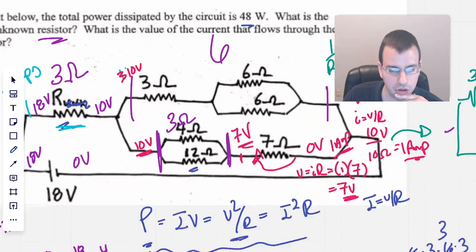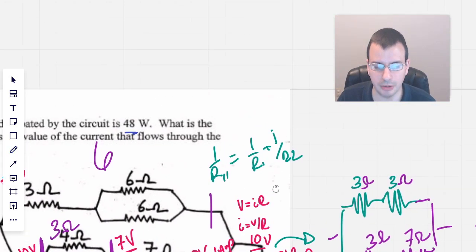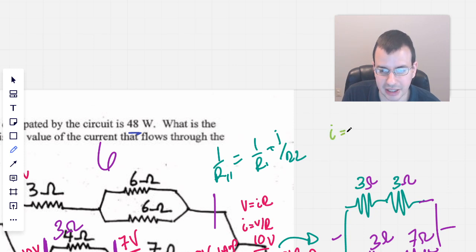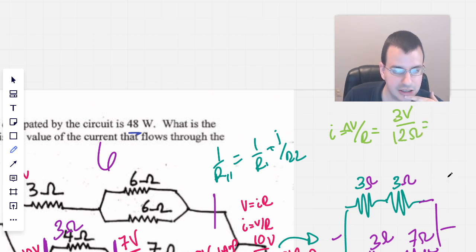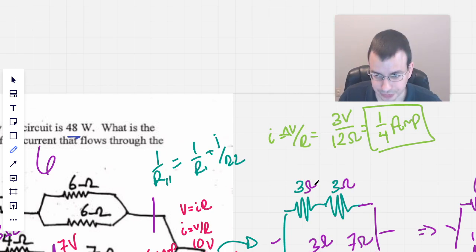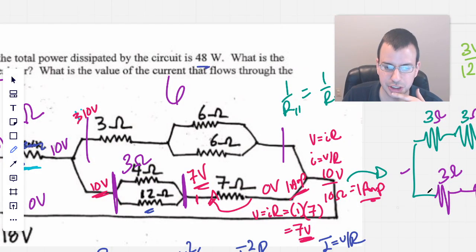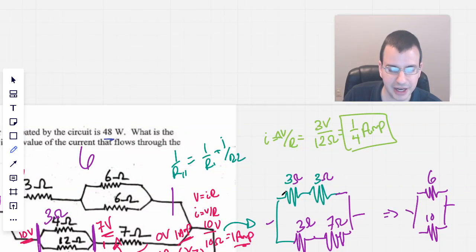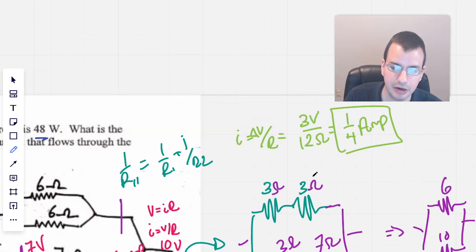If we look at this 12-ohm resistor now, I equals V over R, Ohm's law rearranged. I'm going to write delta there to show a change in voltage. The difference in voltage will be 10 minus 7, so we have 3 volts. The resistance here is 12 ohms. So 3 divided by 12 will be 1 fourth amp. The two answers here: the first was we wanted to find this resistor, 3 ohms, and the other we wanted to find the voltage through the 12-ohm resistor, which is 1 fourth amp.